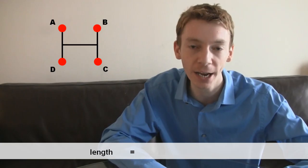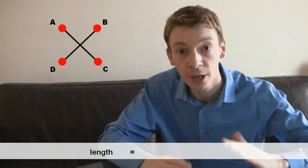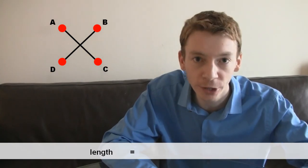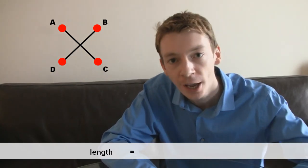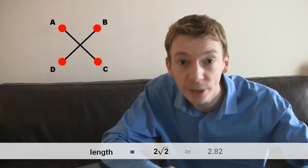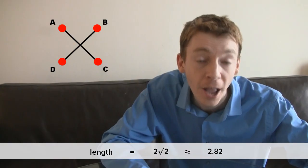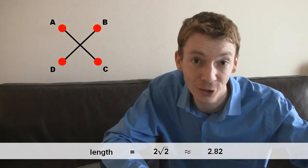But this isn't the minimum answer either. You might have thought the smallest answer would have been a cross. So those two diagonals, well, the diagonals have length root 2, so this has a length of 2 root 2, which is about 2.82. That's certainly the smallest answer so far. But it isn't the minimum solution.